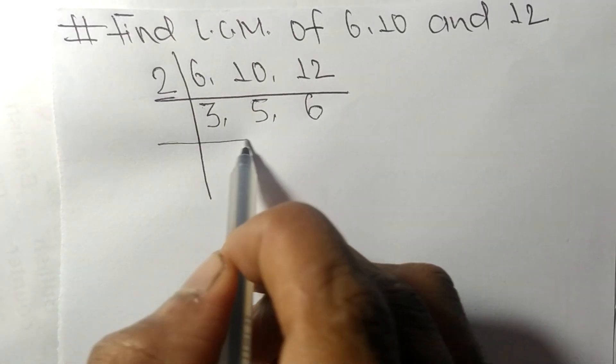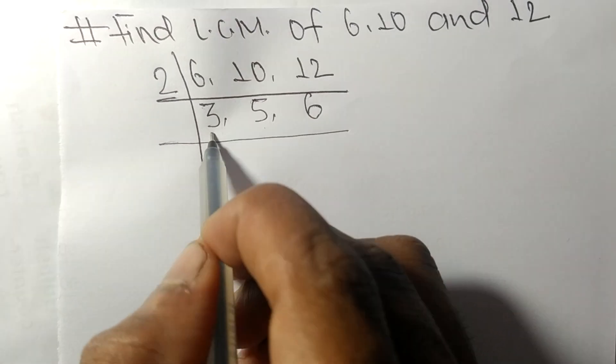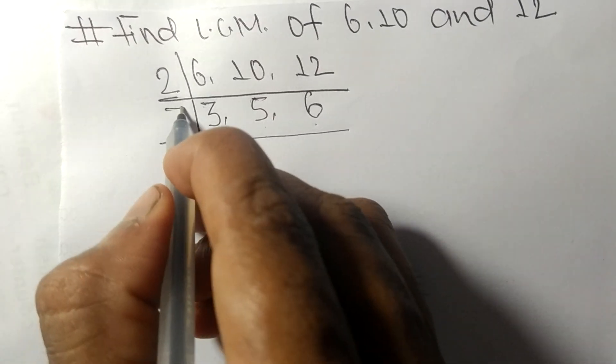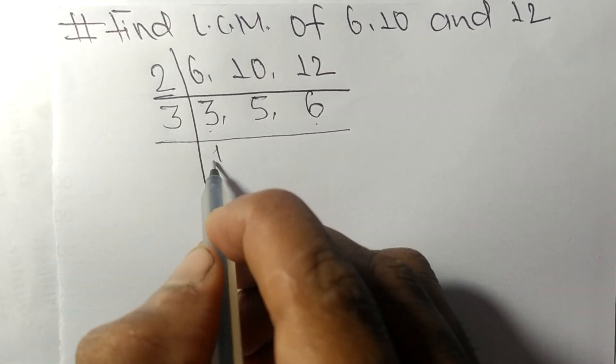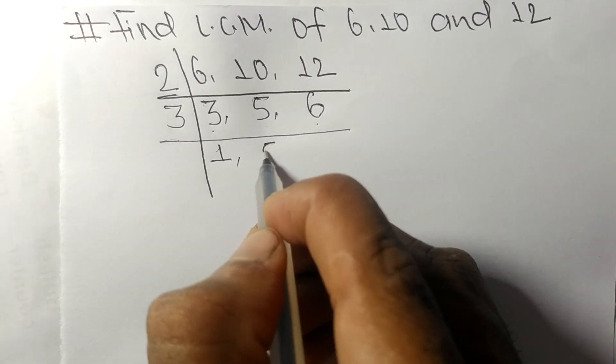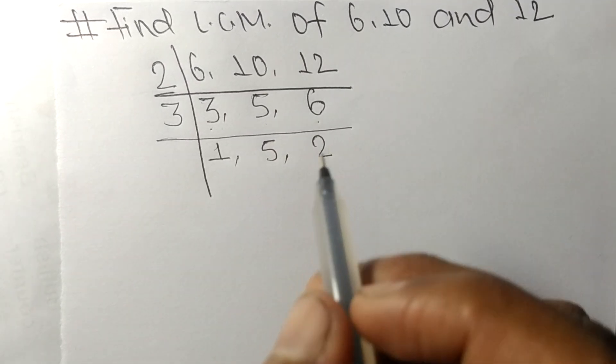Now we got 3, 5, and 6. Among them, 3 and 6 are exactly divisible by 3. 3 times 1 equals 3, 5 is not divisible so it stays the same, and 3 times 2 equals 6. Now we got 1, 5, and 2, which are not exactly divisible by the same number.